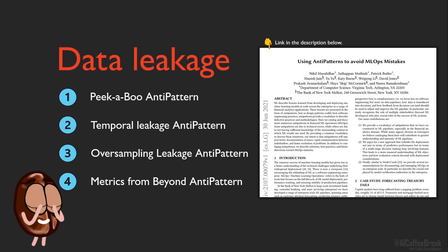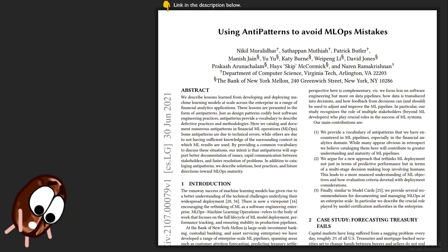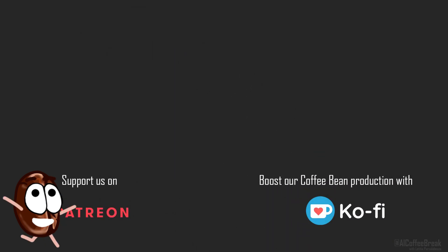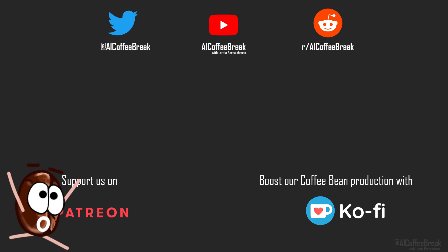Which data leakage anti-pattern is the one that you hate the most? And if you're honest, which one of these traps have you fallen into at least once, so that you have learned the lesson forever? What are other data leakage examples that you would like to share with us? If you're interested in what you have seen so far, read the whole paper to find out all about the other anti-patterns. Until Ms. Coffee Bean sees you again, repeat after her: always separate your train and test data like your life depends on it. Okay, bye.